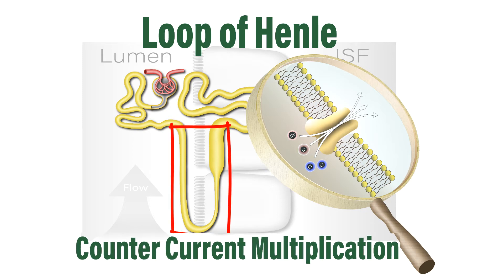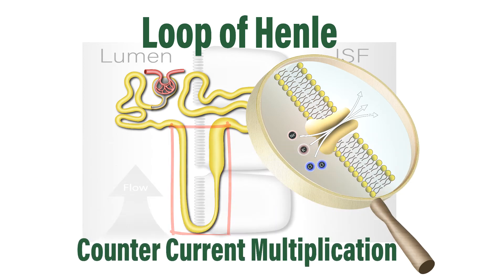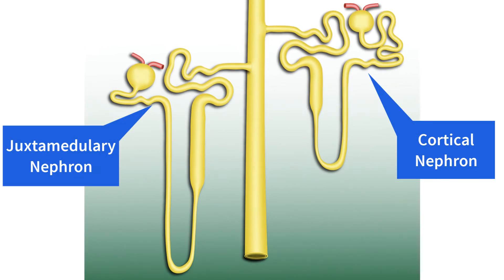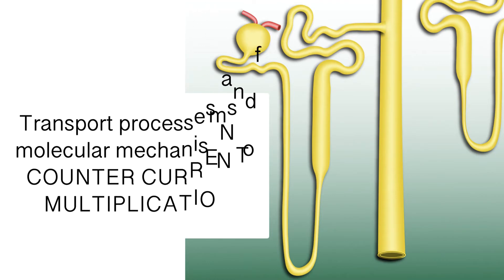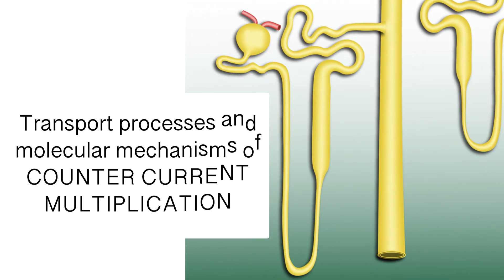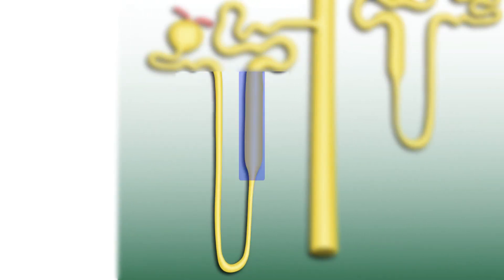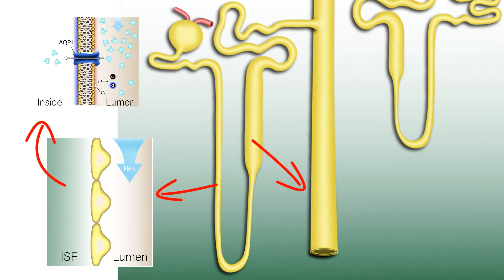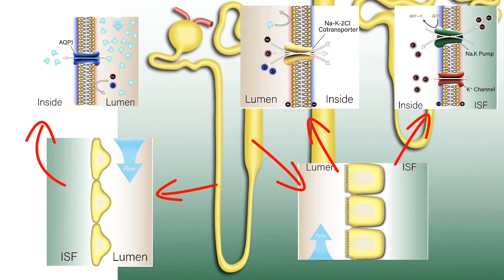The loop of Henle uses countercurrent multiplication to create a hyperosmotic medullary interstitial fluid. This is particularly important for the juxtamedullary nephrons with their elongated loops of Henle that are specialized for this task. This video details the transport processes and molecular mechanisms underlying countercurrent multiplication, briefly introducing the main structural features of the loop of Henle, detailing the individual transport processes within each sub-segment, and explaining how countercurrent multiplication works.